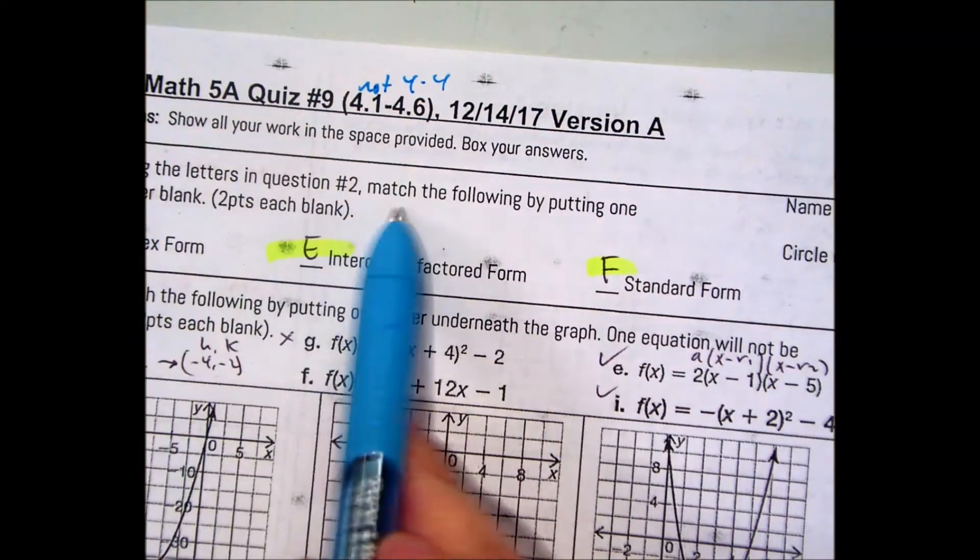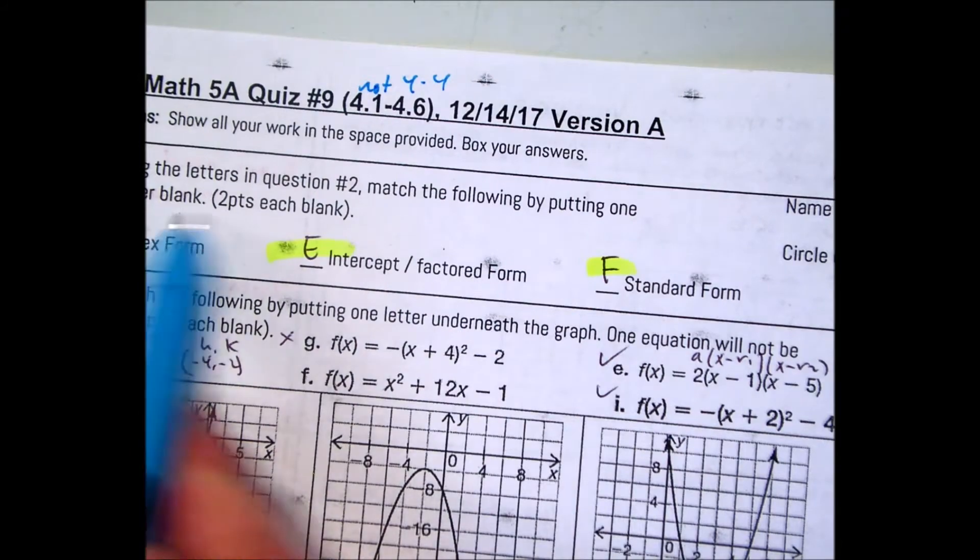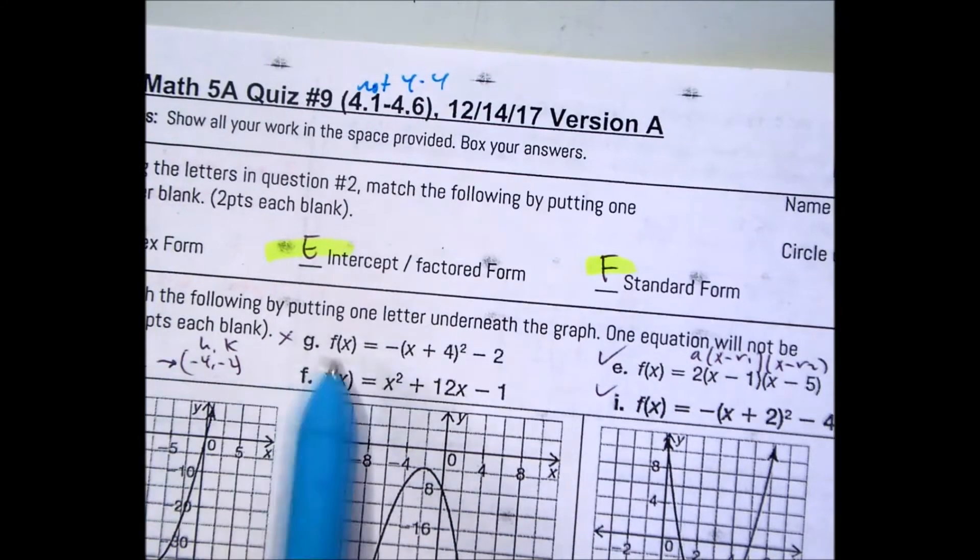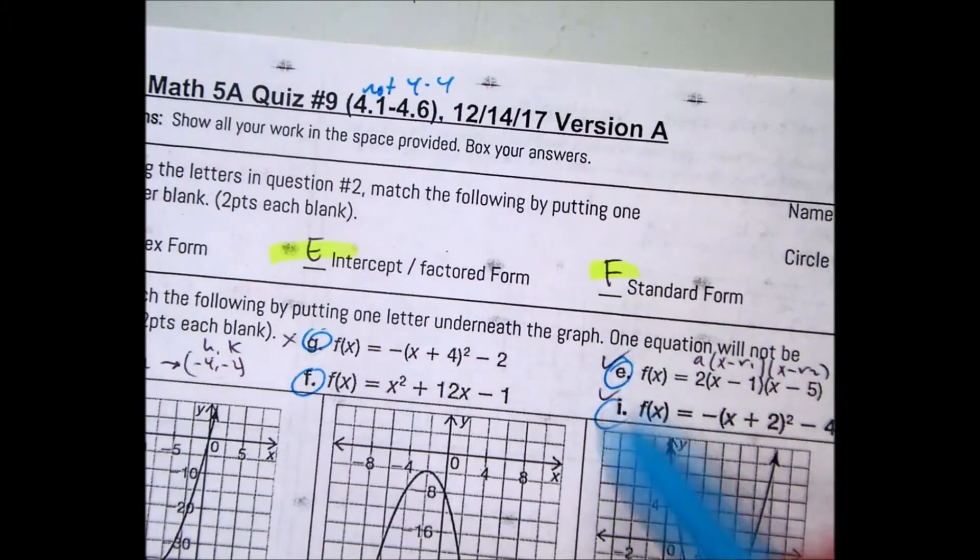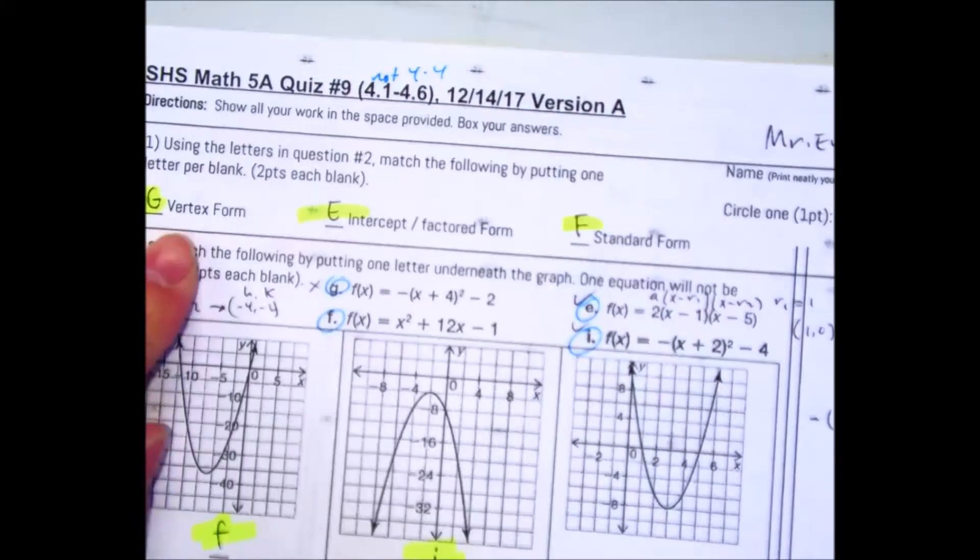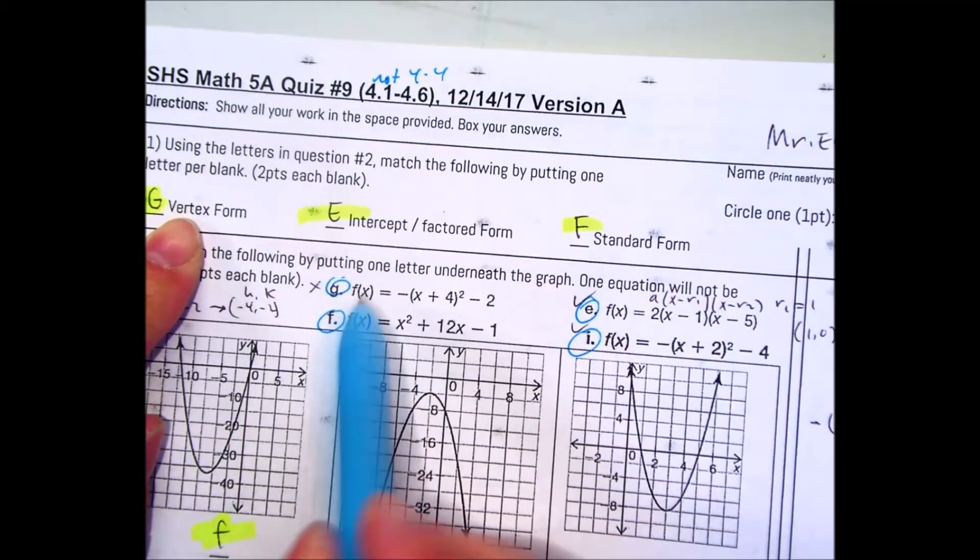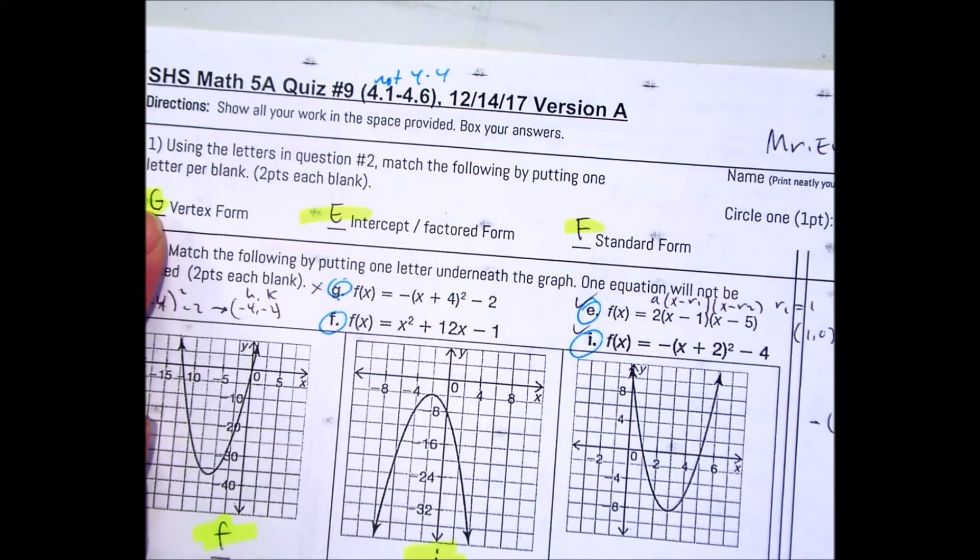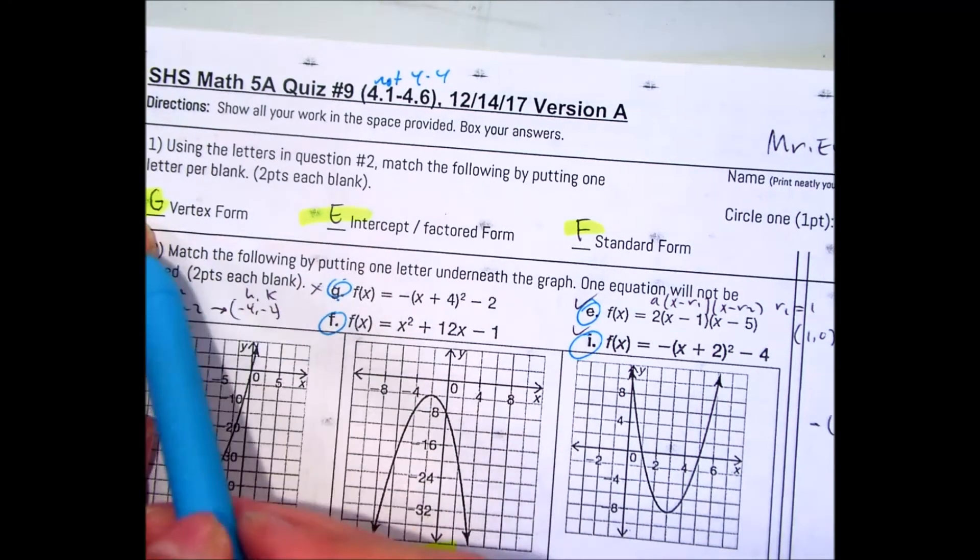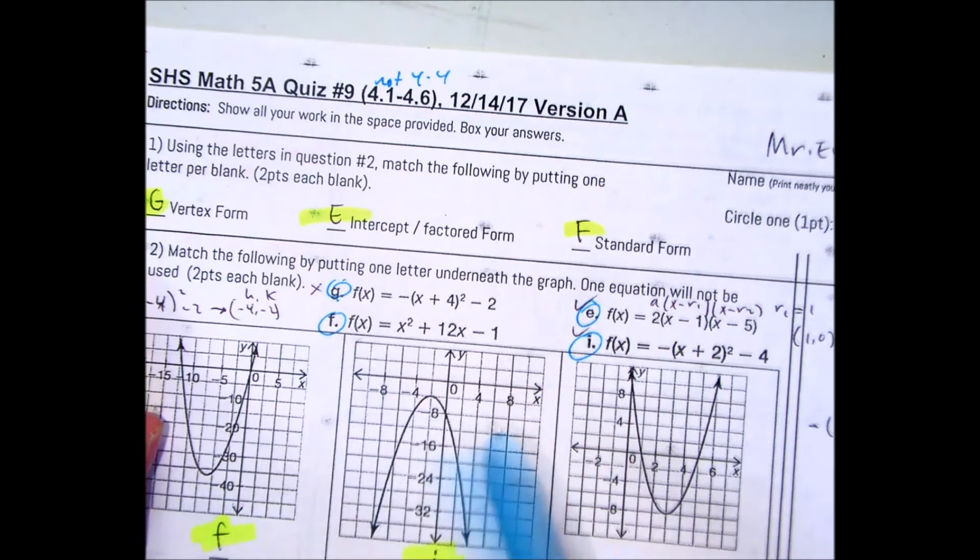Using the letters in question number two, match the following by putting one letter per blank. I recognize that there are four letters. Of these four letters, vertex form has a parenthesis to the power of two. So you could have either put G or I in there and got full credit. You only needed to put one per blank, so you had extra options.